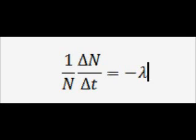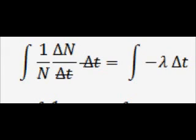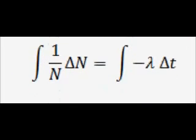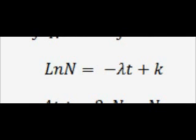So 1 over n times dn/dt equals minus lambda. Putting the integral sign over both sides and integrating with respect to t, on the left-hand side the dt's cancel, so I'm integrating 1 over n with respect to n, which equals the integral of minus lambda with respect to t. The integral of 1 over n is the natural log of n, equal to minus lambda t, because the integral of the constant lambda is just the variable t.